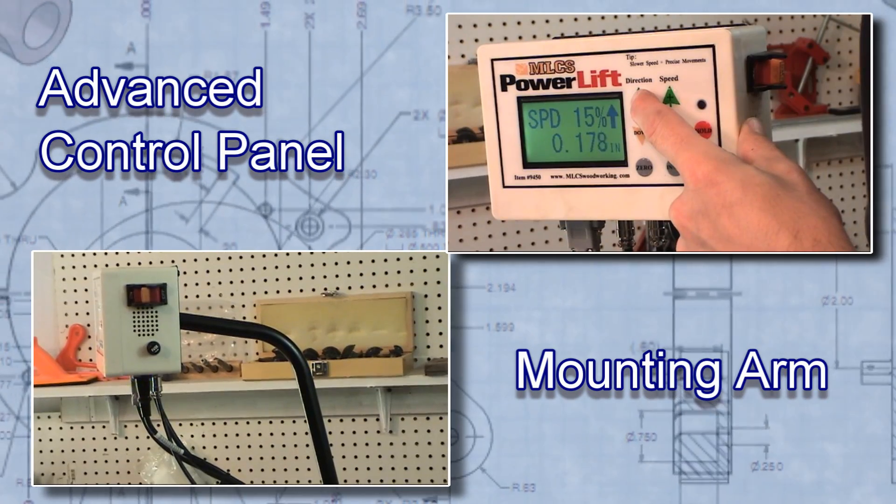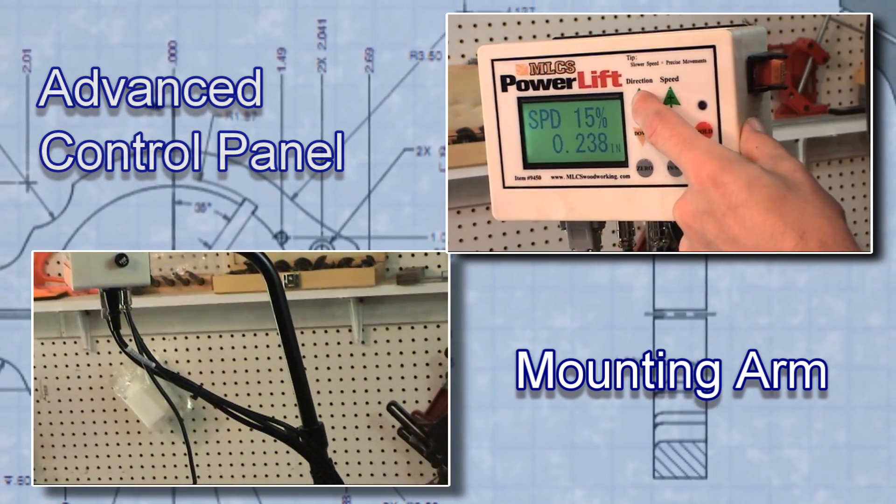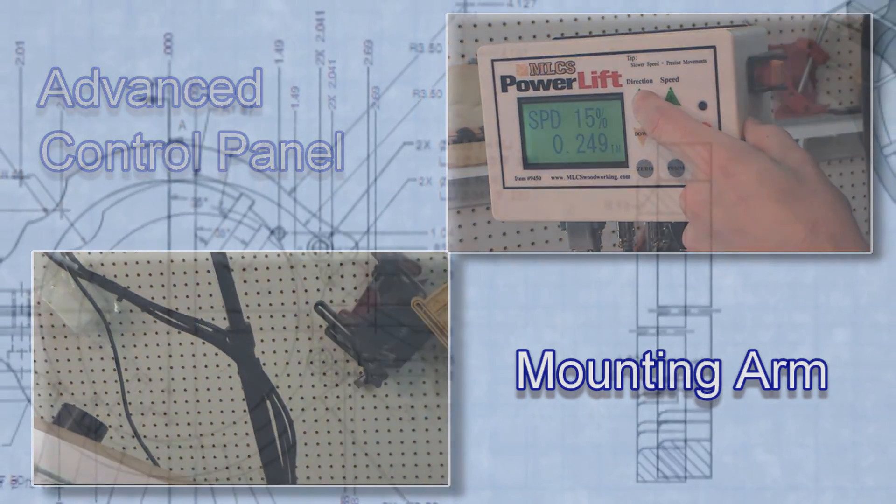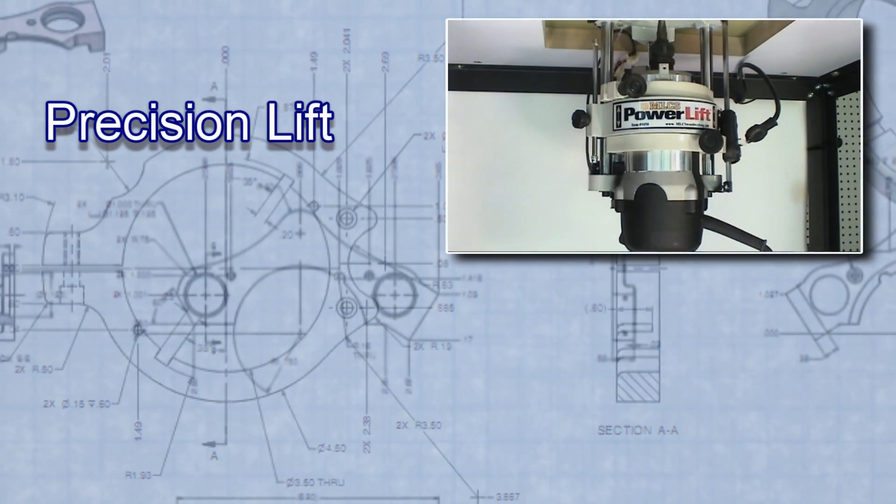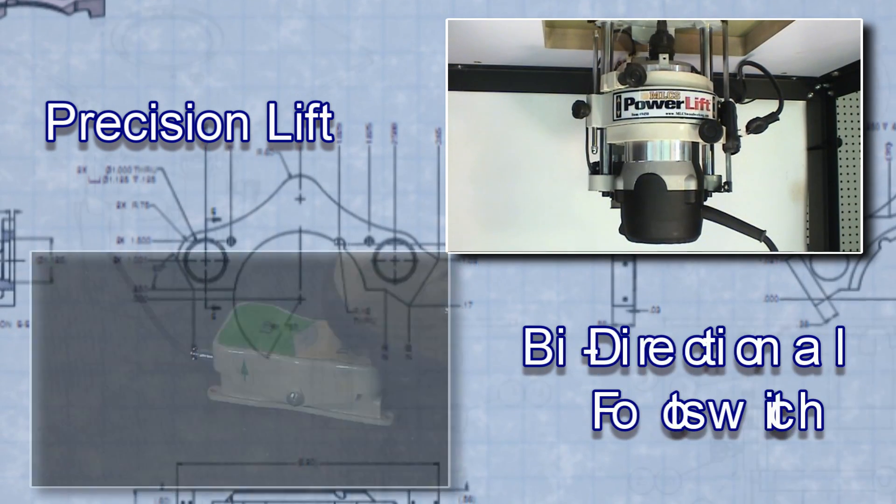The control box mounts conveniently to your router table and puts all the functions of the lift right at your fingertips. The precision lift can be adjusted in increments as small as five one thousandths of an inch.